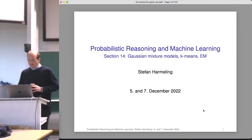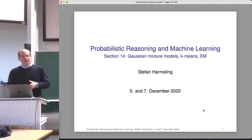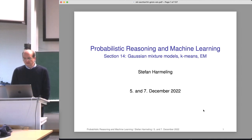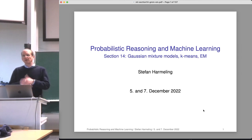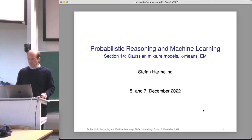Welcome everyone to our next lecture on probabilistic reasoning and machine learning. Today we continue with the Gaussian mixture model, k-means, and expectation maximization. We will continue with some intuitive derivations for the Gaussian mixture model, then a more rigorous way to think about expectation maximization, and finally some other optimization tricks that might be useful elsewhere as well.